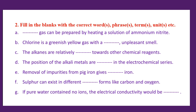Number B: Chlorine is a greenish gas with an unpleasant smell. Chlorine gas is a greenish gas with a choking and unpleasant smell. Number C: The alkanes are relatively inert towards other chemical reagents.